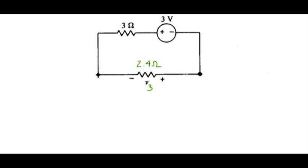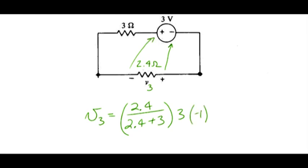So now we see two resistors connected across a voltage source. First we can use voltage divider and V3 is 2.4 over 2.4 plus 3 times the 3 volt value. And if you look at polarity you see that we have a mismatch here so we need to multiply by negative 1 to get the correct sign. And that value works out to be minus 1.33 volts.